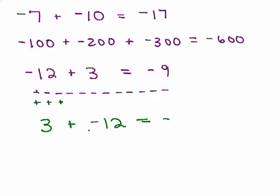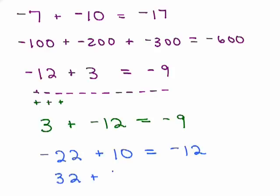Let's say you've got negative 22 plus 10. I'm adding different signs — some negatives and positives — so I just have to see which one outweighs the other. There are more negatives, so I take the difference: 22 minus 10 is 12, so the answer is negative 12. What if you've got 32 plus negative 11? Again adding positives and negatives — this time more positives, so the answer is positive. Then subtract 32 minus 11 to get positive 21.